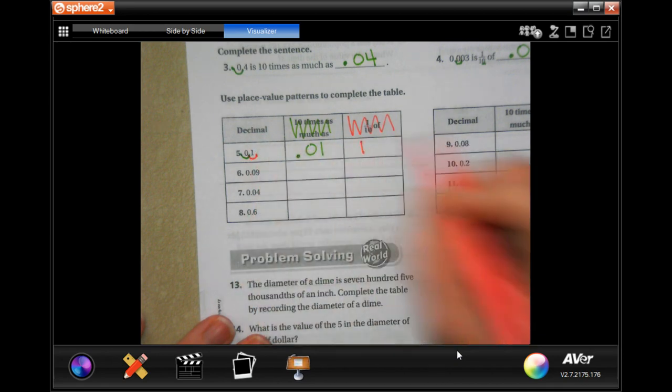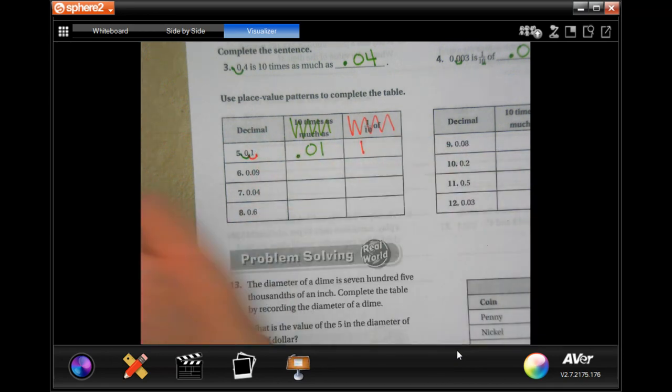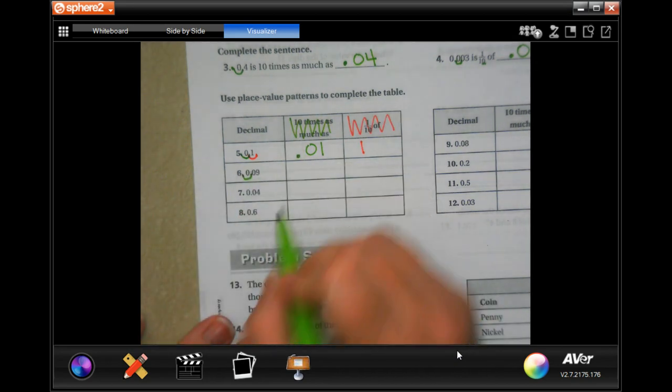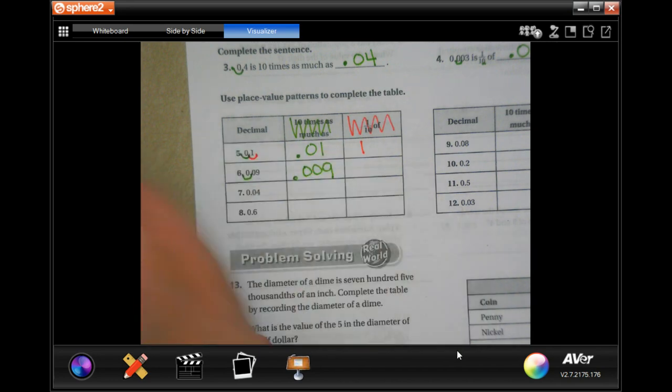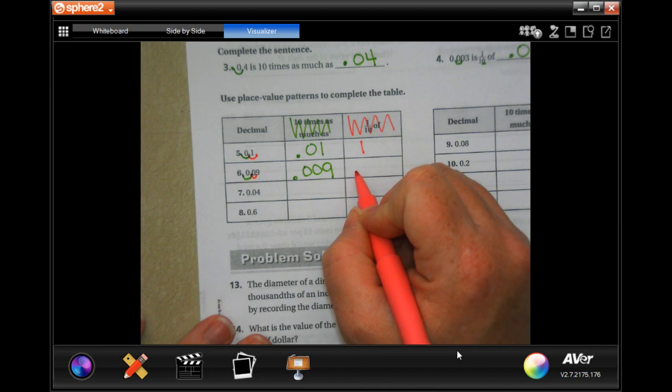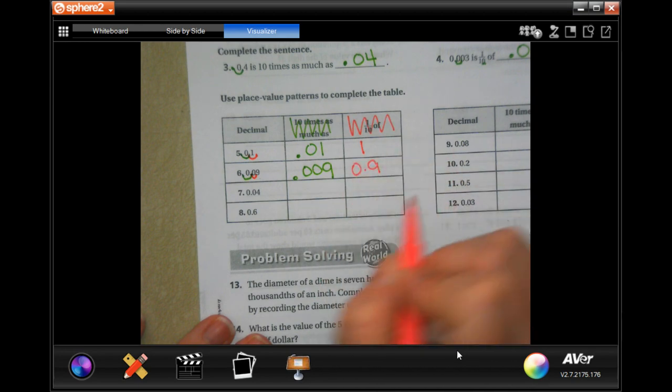This one is going to get smaller, it's going to be 0.009, and this one is going to get bigger so it's going to be 0.9.